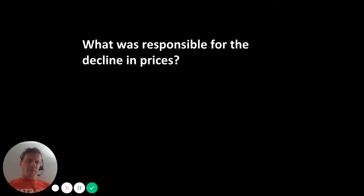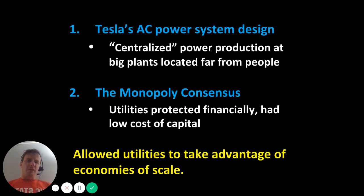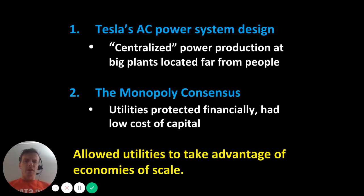We talked about what was responsible for this decline in prices, and there were two main things that we identified. The first was technological: Tesla's AC power system design, specifically the ability to increase the voltage of electricity at the source and transmit it with limited losses of power over long distances via high-voltage transmission lines. This meant that we were able to produce electricity in a centralized way — a few really big power plants far away from people, delivering electricity over transmission lines at high voltages.